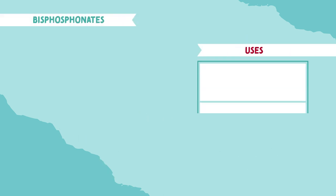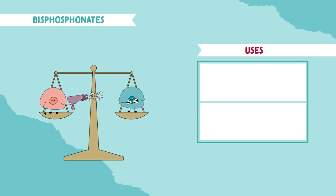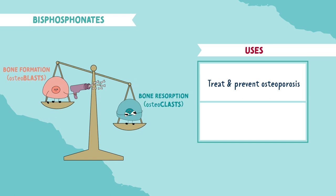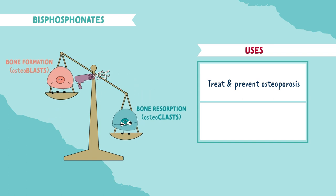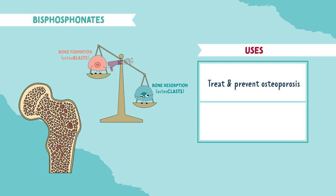Let's look at why bisphosphonates are used. In a healthy adult, there is a balance between osteoblasts and osteoclasts. But in osteoporosis, the rate of bone resorption by osteoclasts is greater than the rate of bone formation by osteoblasts. This leads to a decrease in total bone mass, causing porous and spongy bones.